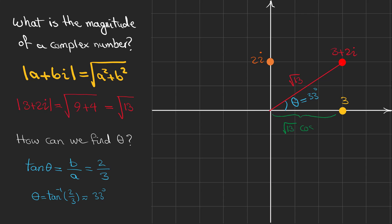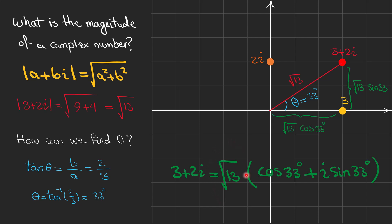We can also write the real part of our complex number as the square root of 13 times cosine of 33 degrees, and the imaginary part as the square root of 13 times sine of 33 degrees. This gives us another form for our complex number: it consists of the magnitude — the square root of 13 — multiplied by a parenthesis with a real part expressed by cosine of the angle and an imaginary part expressed by sine of the angle.